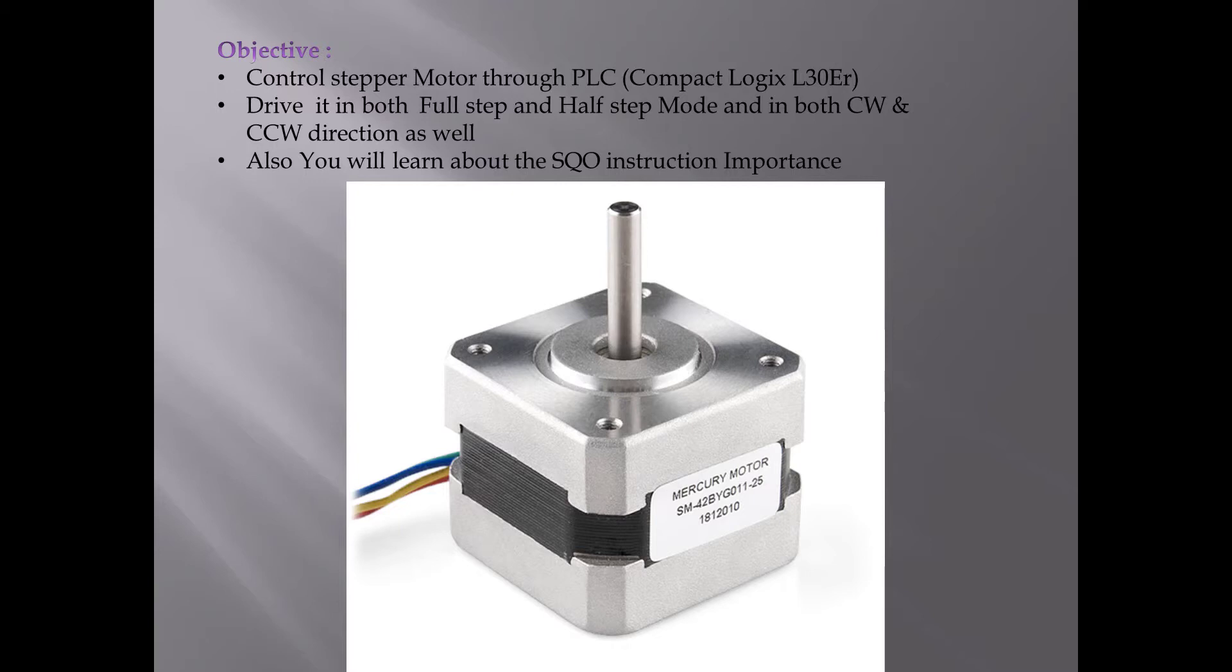After completion of this experiment, you will realize the real importance of sequencer output instruction. You will see how 20 to 30 rung long code can be turned down to only few rungs long code, like about five rungs long.